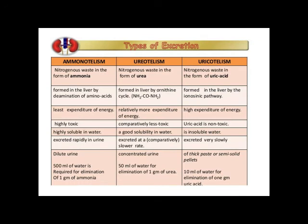The next adaptation is that terrestrial organisms either eliminate uric acid or urea. Uric acid demands the least expenditure of water, which helps in conserving water. Urea also demands lesser water when compared to ammonia. Terrestrial organisms are mostly ureotelic or uricotelic, which helps in water conservation.